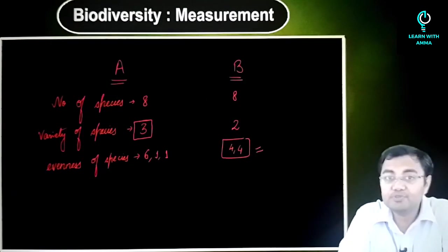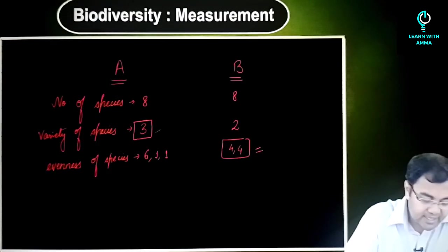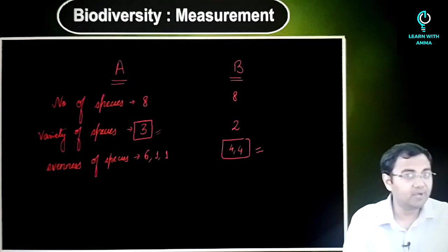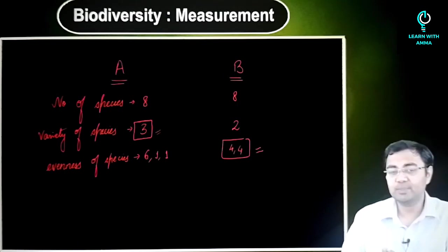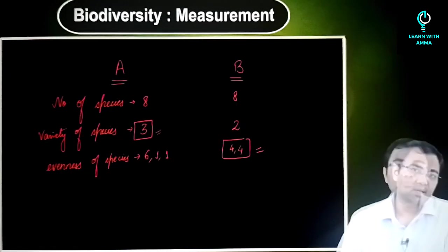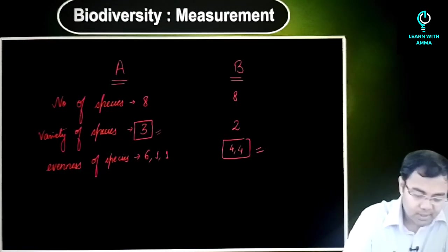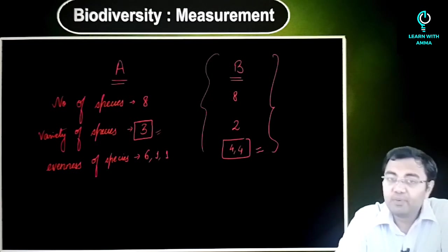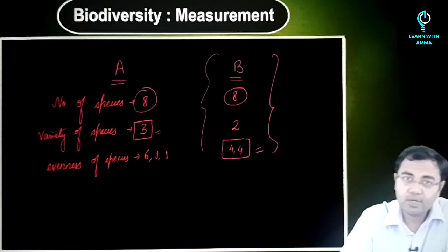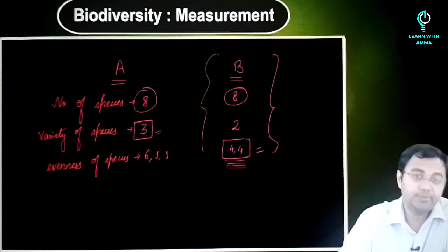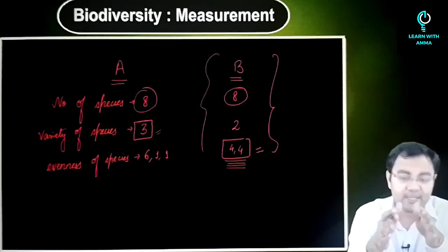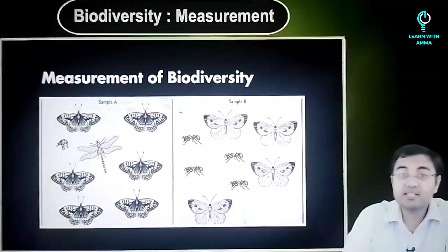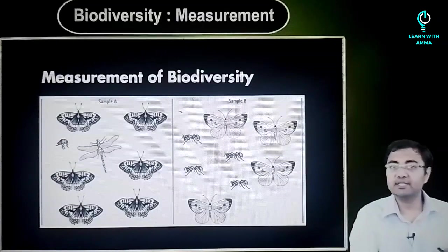Talking about number of different kinds of species, A has an advantage over B. So depending on how I want to measure it, depending on what kind of indices I'm trying to choose, I'll see that probably somebody will say that A is better, somebody will say B is better. But going by general acceptance, we'll say that B is a better sample as compared to sample A. First is because numbers being the same, what we see is that it is more evenly distributed. An evenly distributed ecosystem would mean that it is an ecosystem that may survive longer.